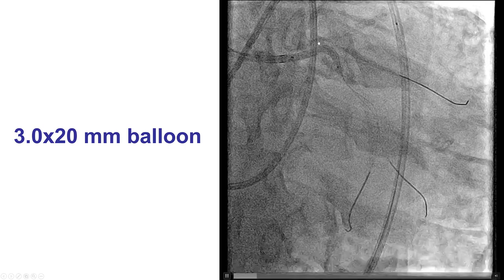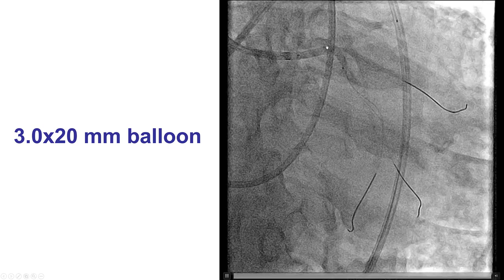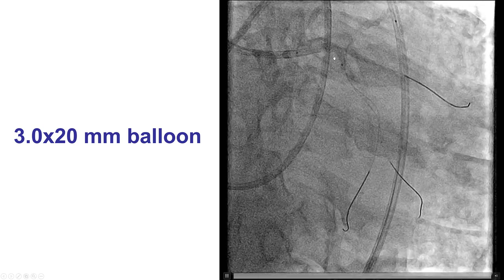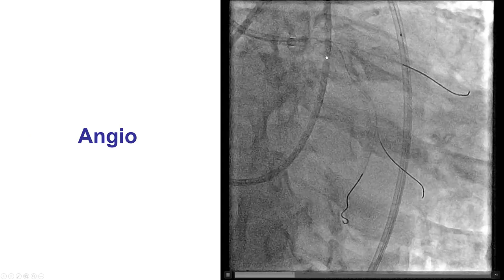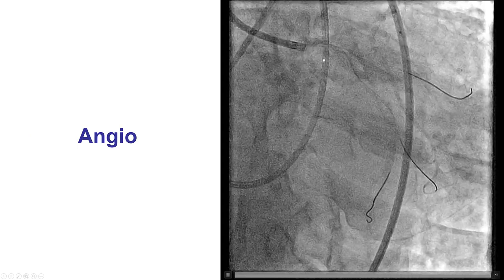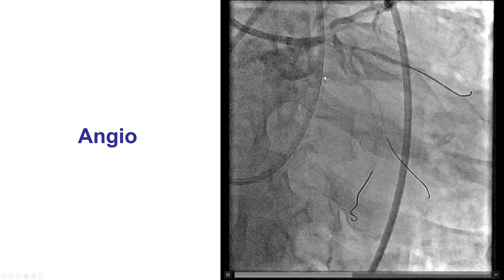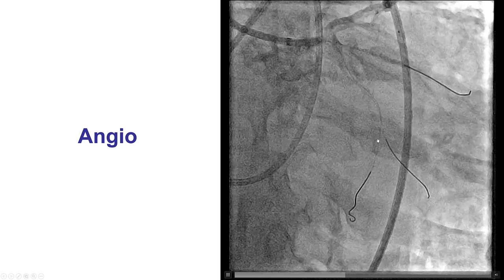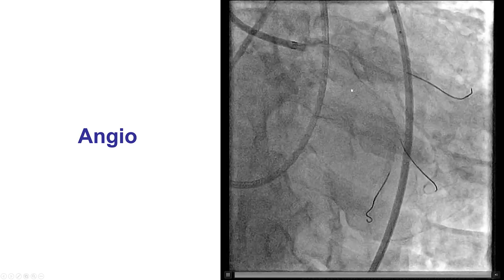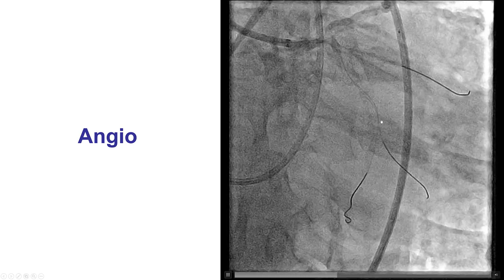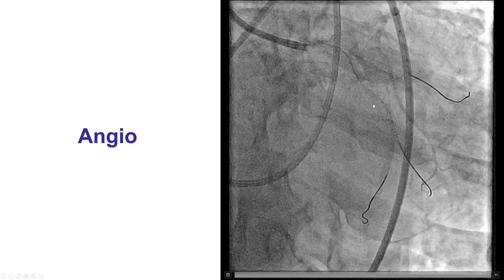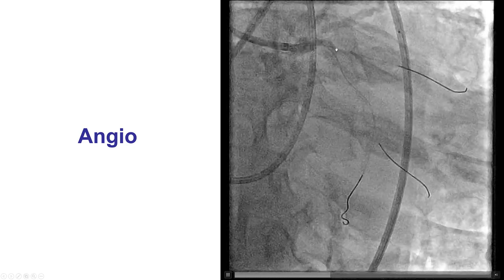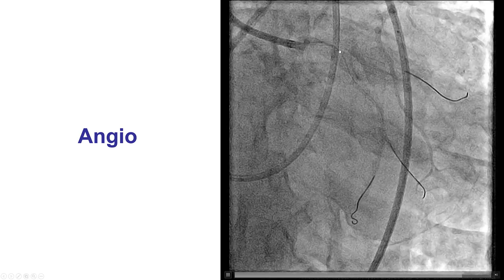Given the significant stenosis in the left main and the intermittent pressure dampening for which we had to engage and disengage the guide catheter, we performed balloon angioplasty of the left main. That improved the stenosis, although we still have a significant lesion at the distal bifurcation. We have some better flow, but still relatively slow flow into the circumflex.